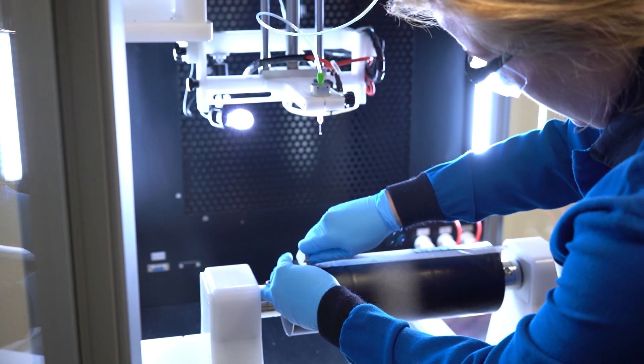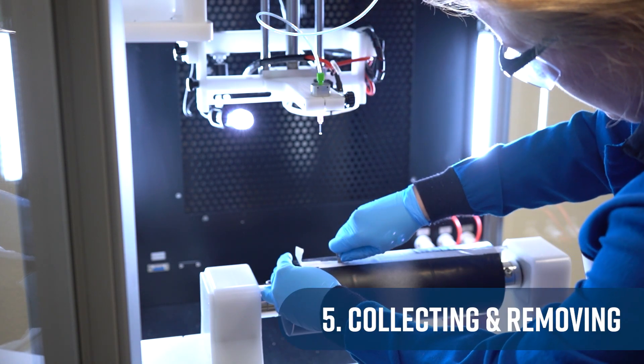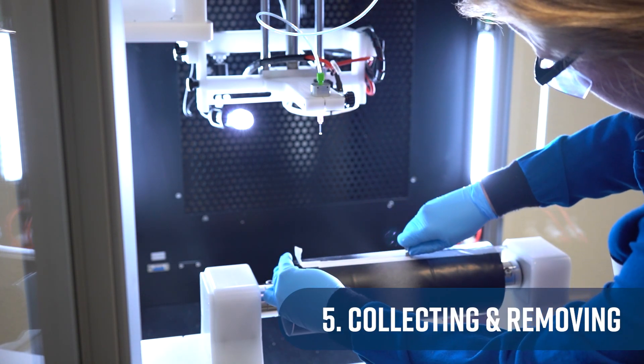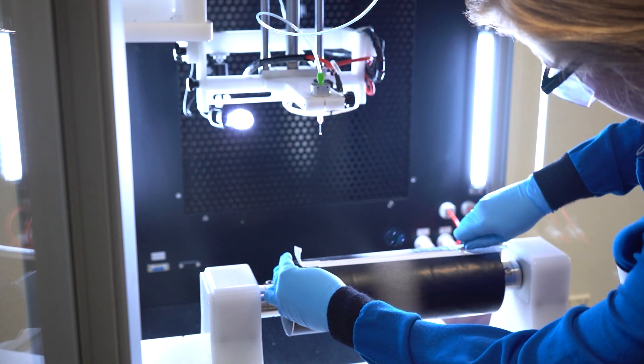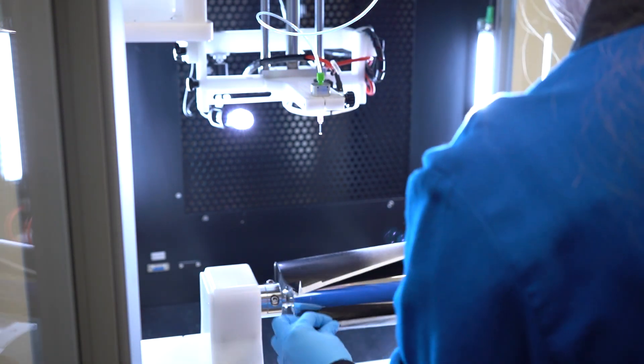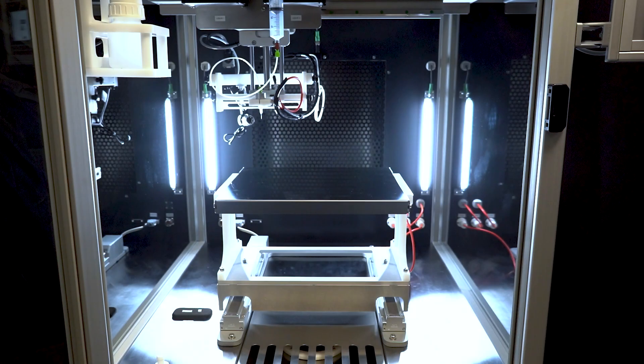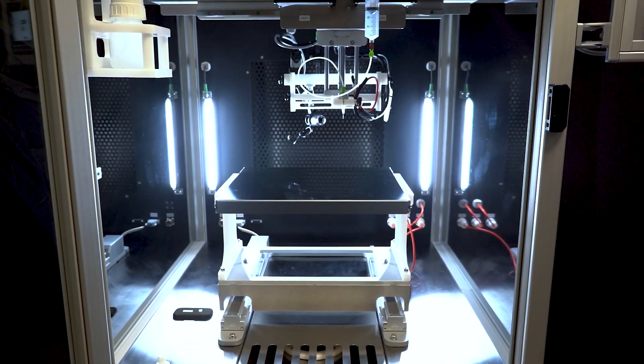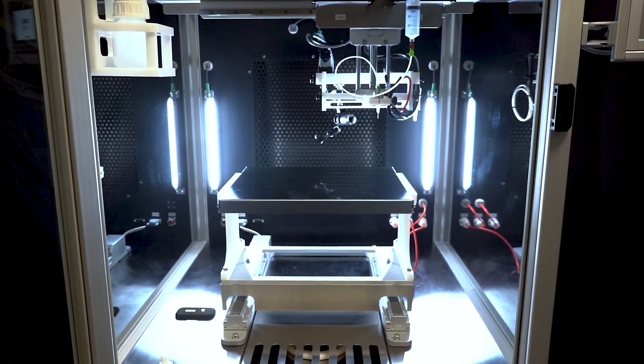This brings us to step five, collecting and removing the nanofibers. As the nanofibers are spun, they'll be deposited on the collector surface. This could be a rotating drum, as we see in this case, a stationary flat plate, or any other surface suitable for your project.